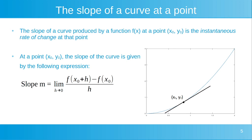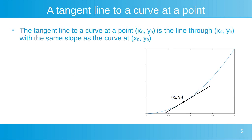Now a bit about the slope of a curve at a point. The slope of a curve produced by a function f at a point x0, y0 is the instantaneous rate of change at that point of the curve. At a point x0, y0, the slope of the curve is given by the following expression: it can be calculated as the limit of f of x0 plus h, minus f of x0, divided by h, as h approaches 0. The tangent line to a curve at a point x0, y0 is the line through the point x0, y0 with the same slope as the curve at x0, y0.